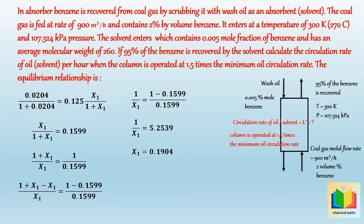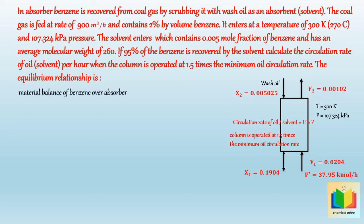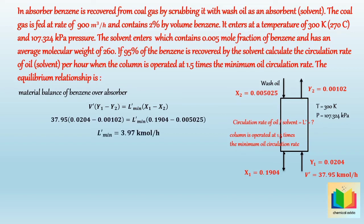Hence we get all values: X1 is equal to 0.1904, X2 is equal to 0.005025, Y1 is equal to 0.0204, V dash is equal to 37.95 kilomole per hour, and Y2 is equal to 0.00102. Now we can calculate L dash minimum. From the material balance of benzene over the absorber, after putting values and solving it, we get L dash minimum equal to 3.97 kilomole per hour. Hence the minimum flow rate of benzene-free solvent, L dash minimum, is equal to 3.97 kilomole per hour.